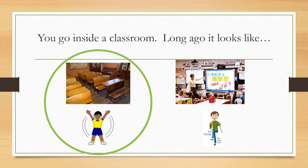Long ago you would see a classroom that looks like that first picture. The reason the second picture couldn't have happened long ago is because most of the things in that second picture require electricity. And remember, electricity hadn't been invented long ago. See if you can spot things in that second picture that use electricity — I see a smart board, a projector, and overhead lights. All of those things require electricity.